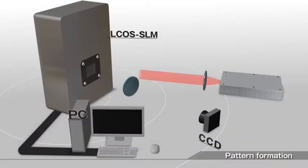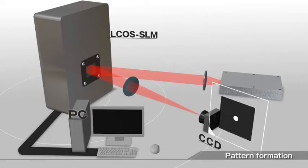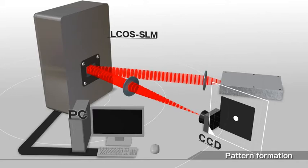This technique for generating optical patterns works by condensing light output from an L-COS SLM to any desired light distribution. Normally, light is condensed by a lens to a single spot.